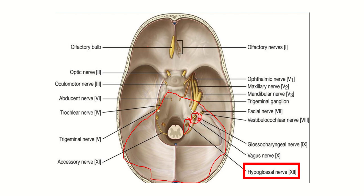First of all, we need to know the details about the jugular foramen — what structures pass through it. Looking at the nerve structures, we can see the glossopharyngeal and vagus nerve, that means cranial nerve number 9 and 10, pass through it. Also the accessory nerve, which is cranial nerve number 11. So these three nerves pass through the jugular foramen.